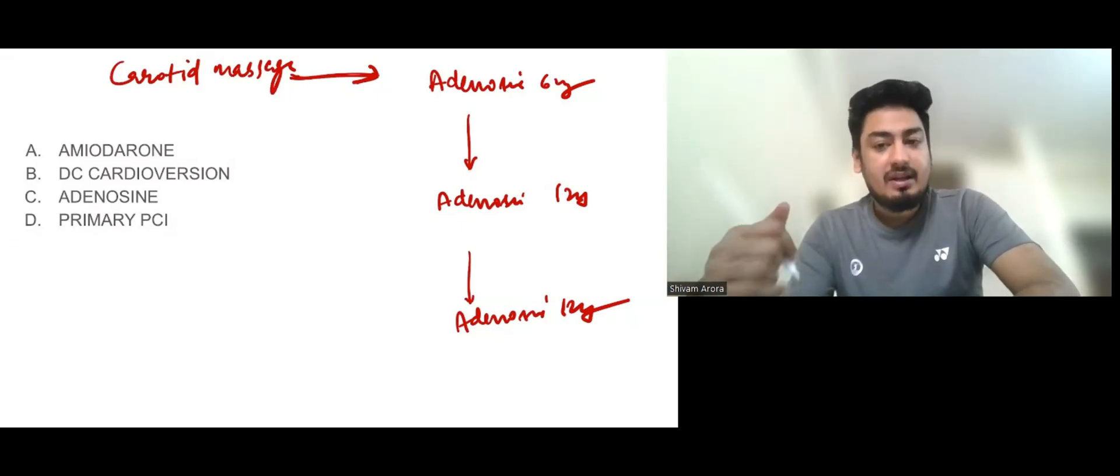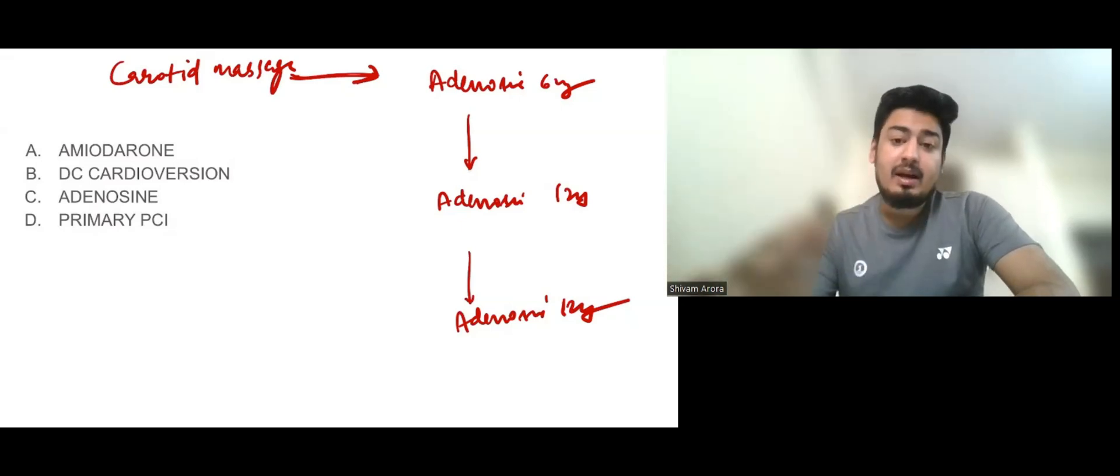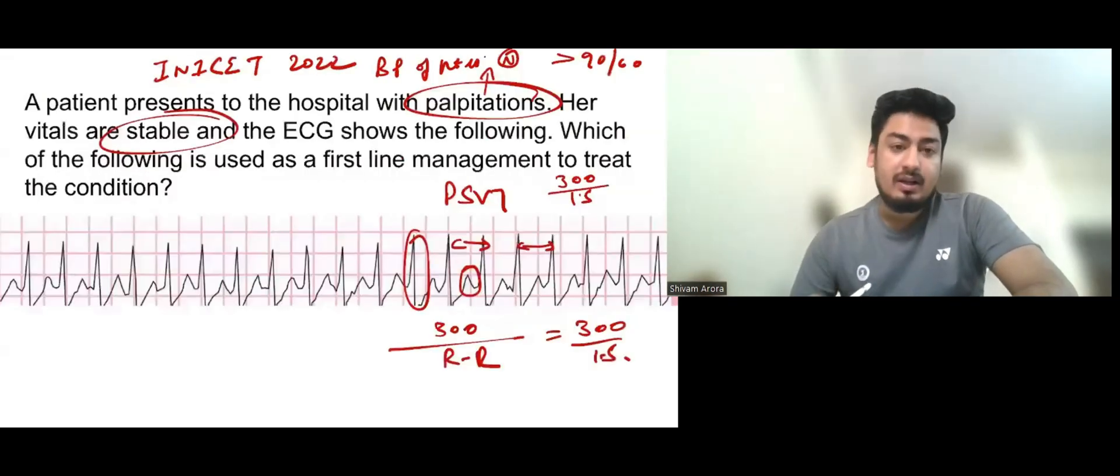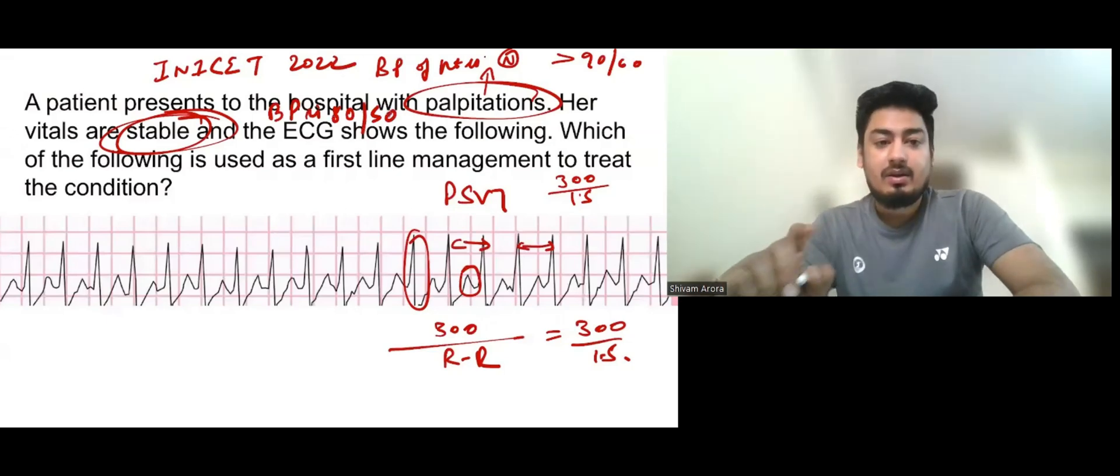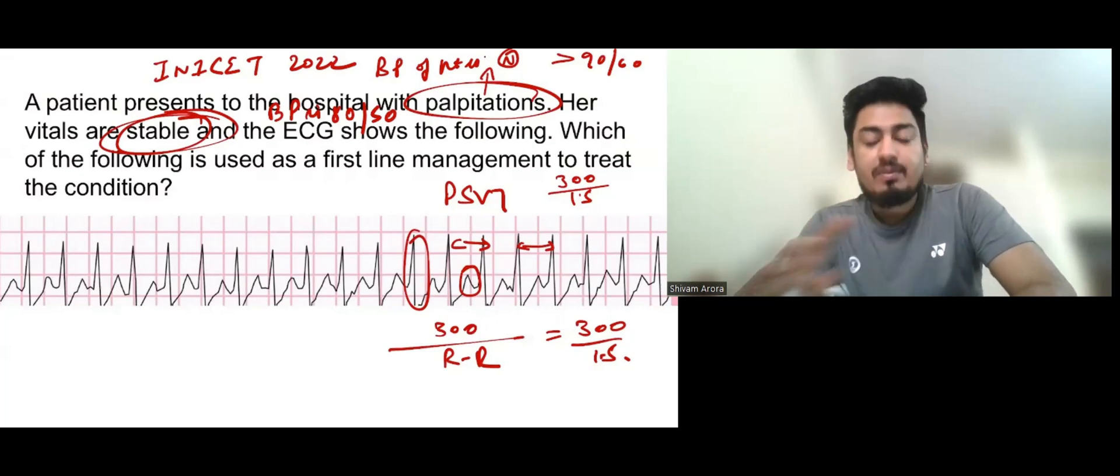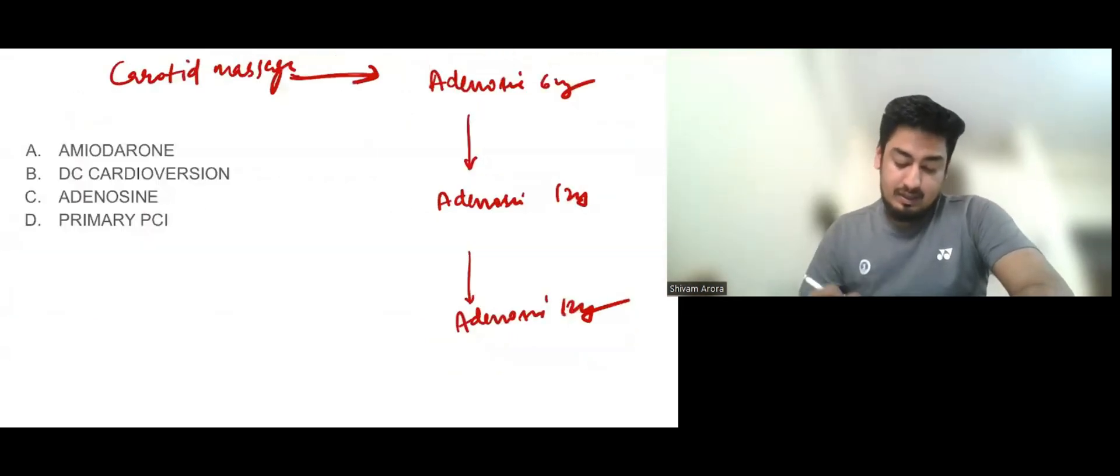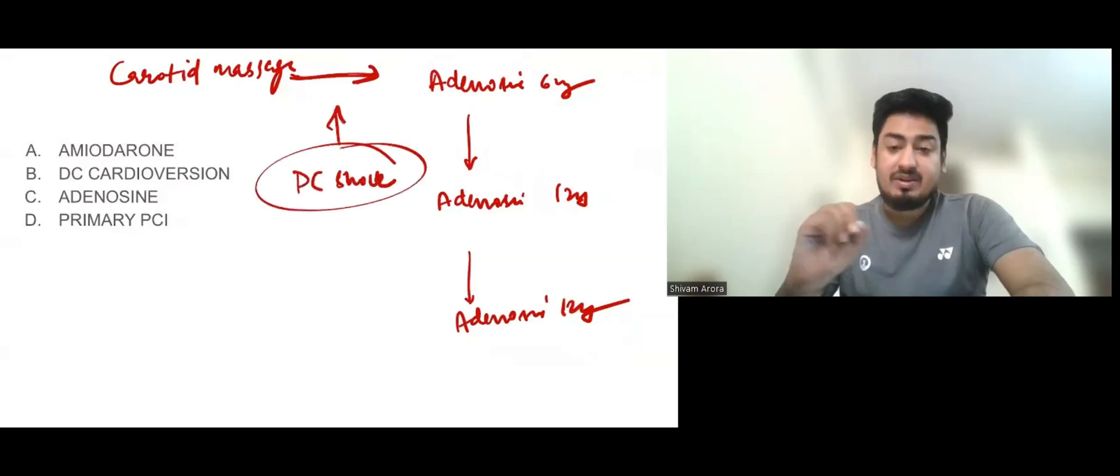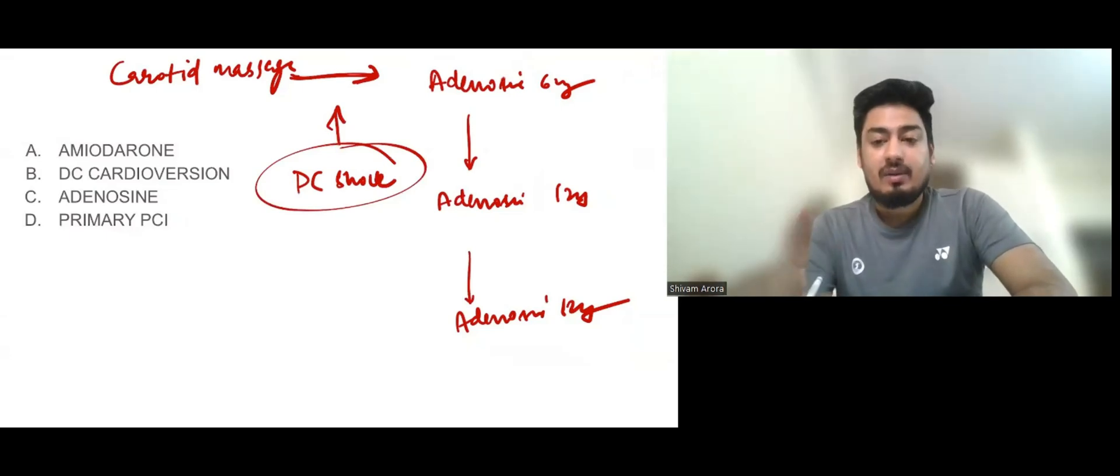But if in the same ECG, the vitals are not stable and BP is 80 by 50, the patient is in shock. If the patient is hemodynamically unstable, in shock, then for any arrhythmia the treatment is cardioversion. So the treatment is DC shock. If any patient is hemodynamically unstable with any arrhythmia, then the treatment is DC shock.